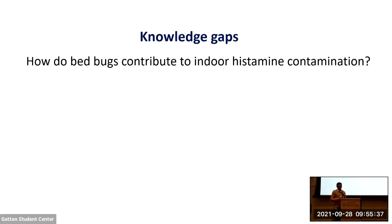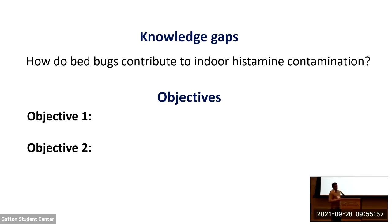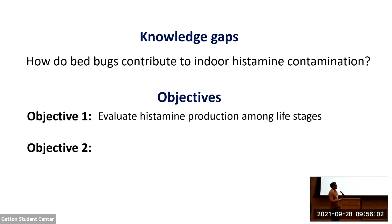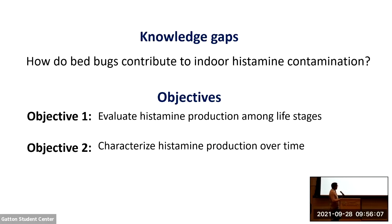So what is the knowledge gap in terms of bed bugs? We know now that bed bugs produce histamine as an aggregation pheromone, and also that histamine has been found in indoor dust. But we don't know how bed bugs contribute to indoor dust contamination — we don't know how much they produce, what life stages produce it, and how much they can produce overall. Therefore, I have two different objectives for today's talk. The first objective is to evaluate histamine production among different life stages. The second is to characterize histamine production over time — with a single blood meal, how much histamine they can produce and for how long.